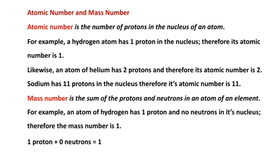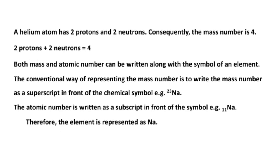Mass number is the sum of the protons and neutrons in an atom of an element. For example, an atom of hydrogen has one proton and no neutron, therefore the mass number is one, because mass number equals protons plus neutrons. Helium has two protons and two neutrons; consequently, the mass number is four, because mass number equals protons plus neutrons, giving you four.